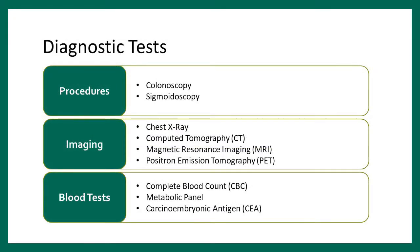For diagnosis, we need a tissue diagnosis — we have to visualize the tumor and take a biopsy. We use colonoscopy or sigmoidoscopy. Colonoscopy is a full examination of the colon with a scope and camera. Sigmoidoscopy is a partial examination covering the lower one-third of the colon. Both can find cancer and allow biopsy. If cancer is found on sigmoidoscopy, a full colonoscopy is still needed to ensure the rest of the colon is clear.